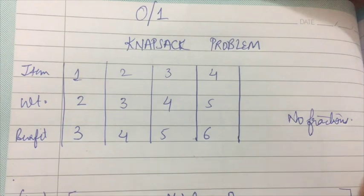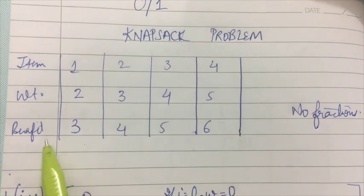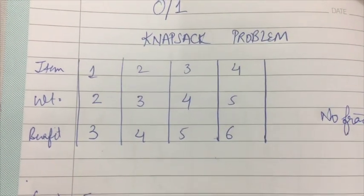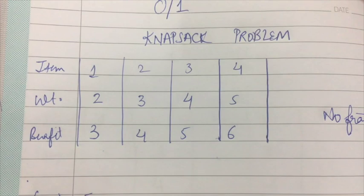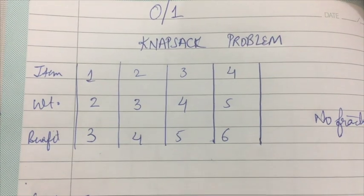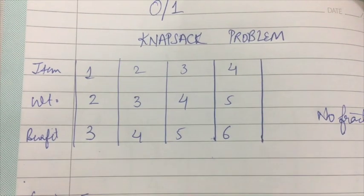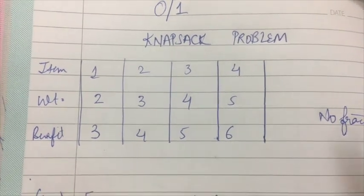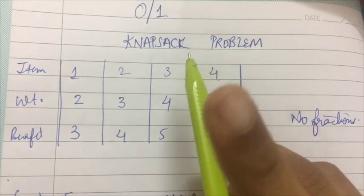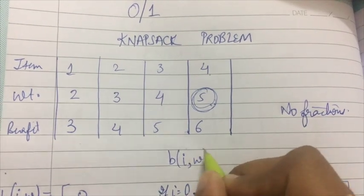We have a question where the number of items is 4. We have the weight and the benefit of each item. What I have to find is the maximum benefit I can put into the bag and which items I will use. The maximum weight capacity is 5 and the number of items is 4. I have to construct a matrix B with rows I and columns W.